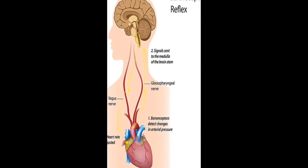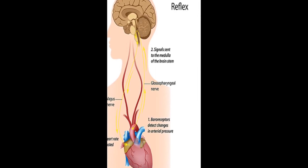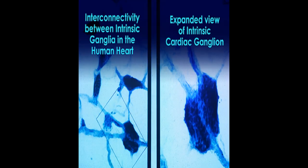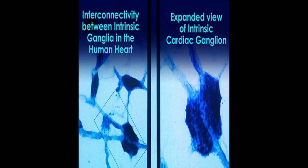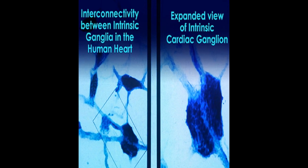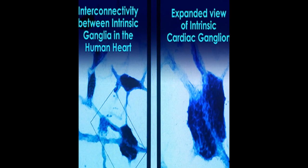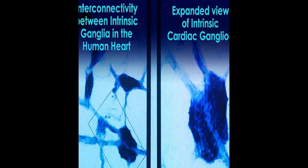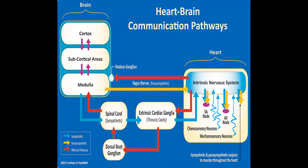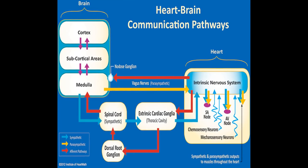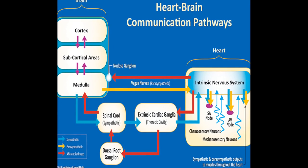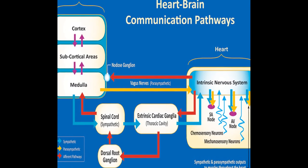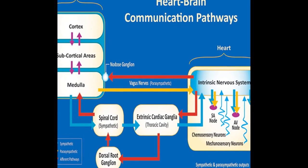The cardiovascular regulation center in the medulla integrates sensory information and input from higher brain centers to adjust heart rate and blood pressure via sympathetic and parasympathetic efferent pathways. Sympathetic and parasympathetic influences on the heart are discussed, as well as the interpretation of HRV and its association with disease risk and mortality.